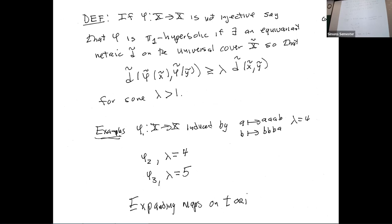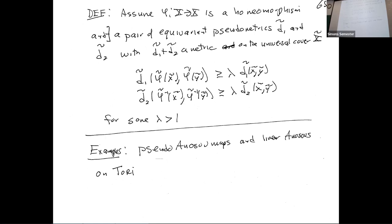The definition of expansion in the cover means we have an equivariant metric in the cover where distances are uniformly expanded. This is what it means to be pi-1 hyperbolic. Examples on the wedge of two circles had lambda equal to four or five. Linear expanding maps on tori also qualify. If you have a homeomorphism, you need to control both forward and backward time, requiring a pair of pseudometrics, which come from the foliations in the pseudo-Anosov case.